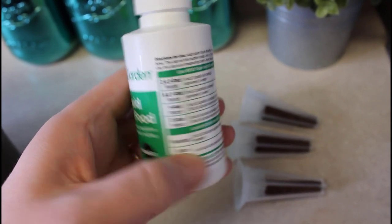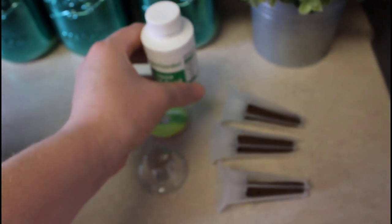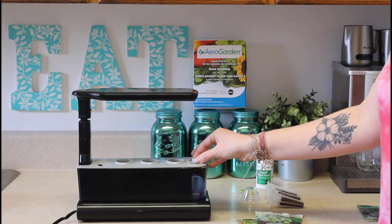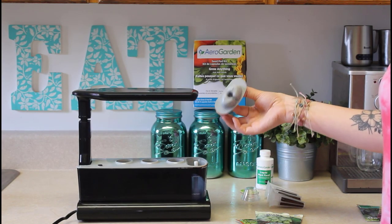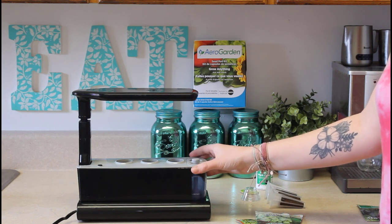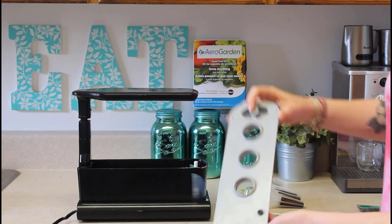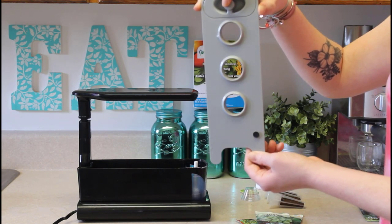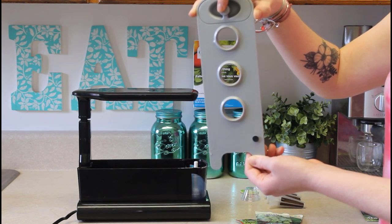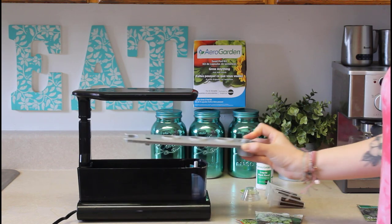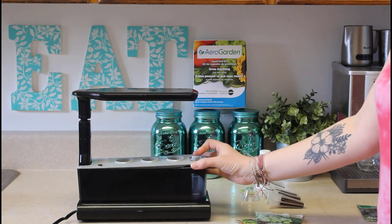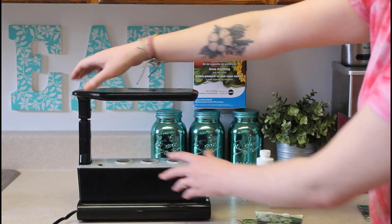Now I'm going to be telling you about the exact model that I have, which is the Sprout AeroGarden. Here is where you're going to be pouring the water in, and I've already gone ahead and filled mine all the way to the top. This model allows for three pods, so you're able to grow three different things at the same time. It also features an adjustable light so you're able to move this up and down as your plants are growing.